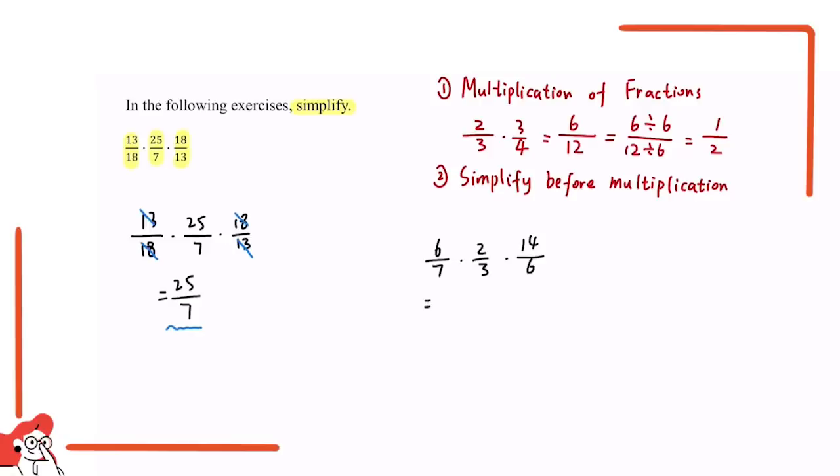We're going to copy the question first. As you can see, the first thing to simplify is definitely 6. And besides that, we also have 7 and 14. As you know, 7 times 2 is 14. So we can simplify this by taking out the 7s. 14 will become 2, whereas 7 will become 1. Now let's continue with this fraction. It's going to be 1 over 1 times 2 over 3 times 2 over 1.